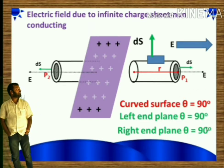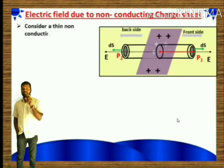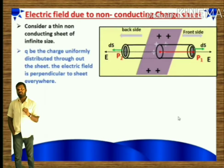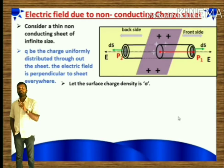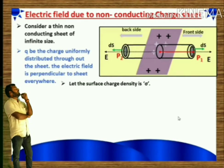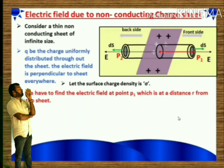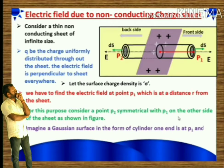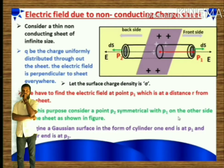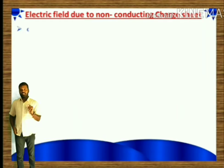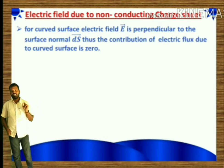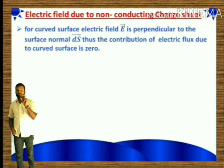Consider a thin non-conducting sheet of infinite size. Let Q be the charge uniformly distributed throughout the sheet, and let the surface charge density be sigma. The electric field is perpendicular to the sheet everywhere on both sides. To find the electric field at point P1 at distance R, imagine point P2 symmetric on the other side, and a Gaussian cylindrical surface with one end at P1 and the other at P2. For the curved surface, E is perpendicular to the surface normal, so the electric flux contribution is zero since cos 90° = 0.